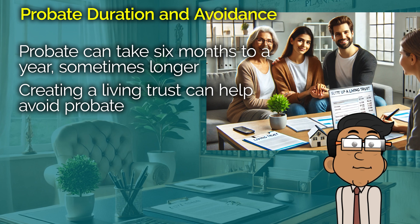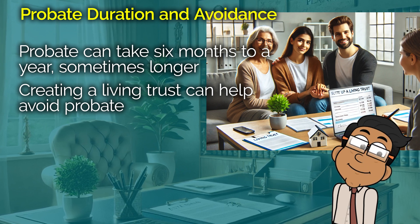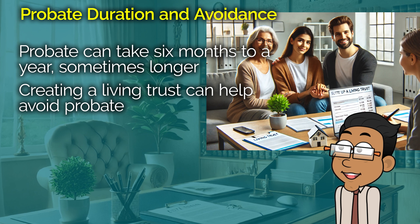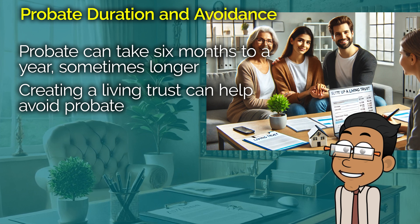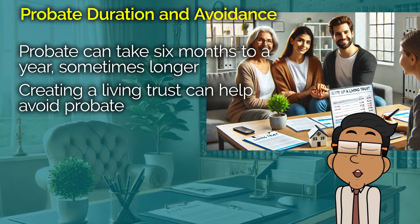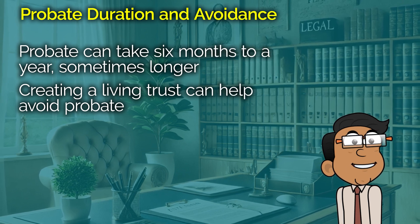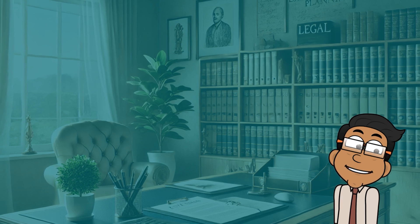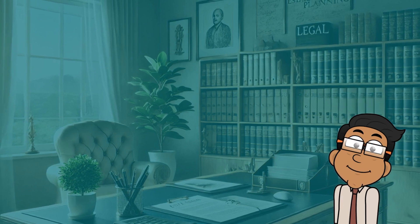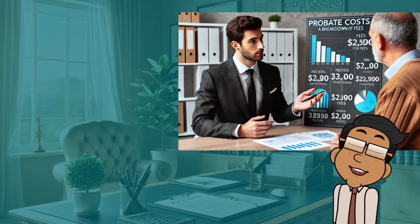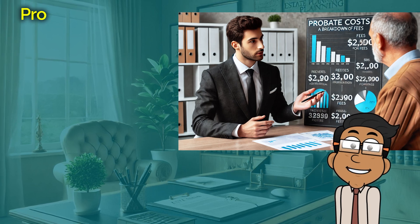A question that often comes up is, can probate be avoided? The answer is yes — there are ways to minimize or even avoid probate. One common method is to create a living trust. When you place your assets in a living trust, they're not considered part of your probate estate and can be distributed to your beneficiaries without going through probate. Other methods include joint ownership of property, payable-on-death accounts, and designating beneficiaries on retirement accounts and life insurance policies.